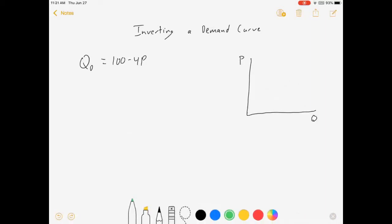To invert a demand curve, instead of having Q as a function of P, I'm going to reverse it and get P as a function of Q. Now how do I do that? I've got to do some algebra, and that's what this video is here to do.